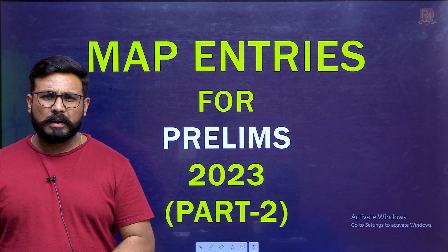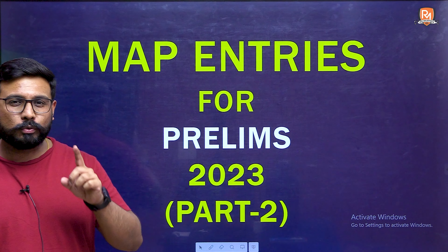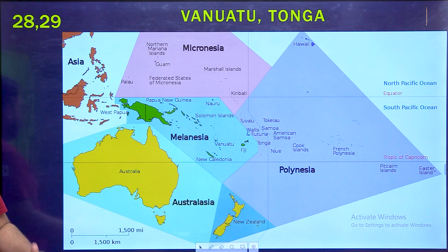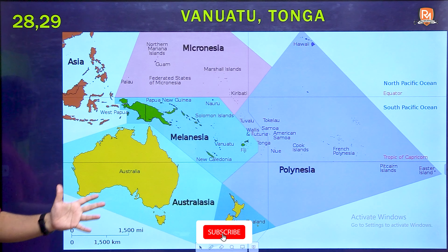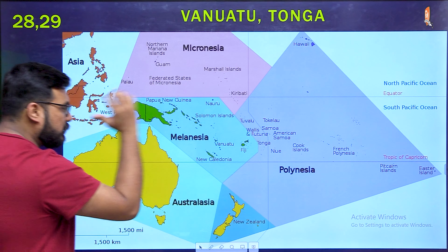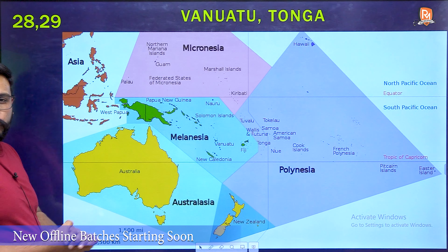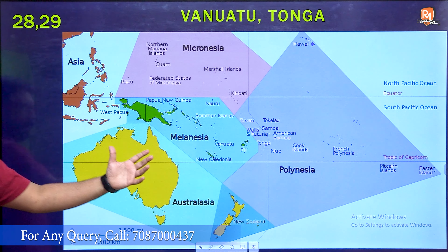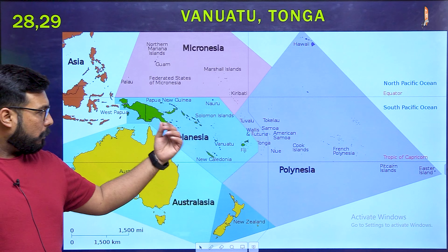A very warm welcome everyone. Welcome to Part 2 of the special map series for the Preliminary Exam 2023. Our next entry takes us to Oceania. Oceania refers to the island nations in the south-western Pacific Ocean, including Australia and New Zealand, collectively called Oceania.